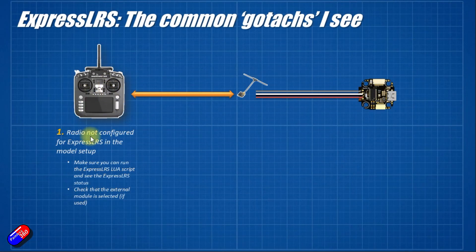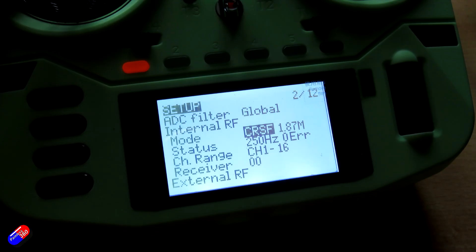So let's start here on the left hand side with the radio and the main issues that I see on this side is the radio isn't configured for ExpressLRS in the model setup. You need to go into the radio itself and depending on whether or not ExpressLRS is either the internal circuitry of the radio or in a module plugged in the back, you need to enable CRSF for whichever position you have it, whether internal or external.